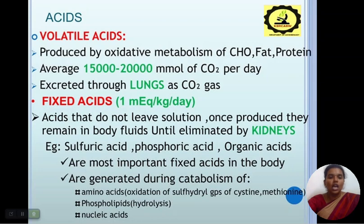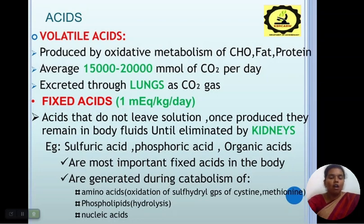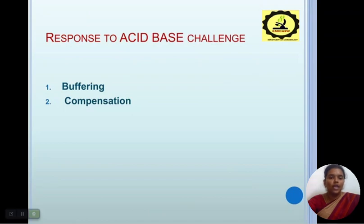Types of acids: volatile acids are produced by oxidative metabolism of carbohydrates, fat, and protein — averaging 15,000 to 20,000 millimolar of CO₂ per day, excreted through the lungs as CO₂ gas. Fixed acids are acids that do not leave solution once produced; they remain in body fluids until eliminated by the kidney — for example, sulfuric acid, phosphoric acid, and organic acids. The most important fixed acids in the body are generated during catabolism of amino acids, phospholipids, and nucleic acids.